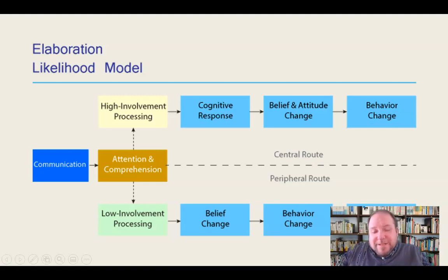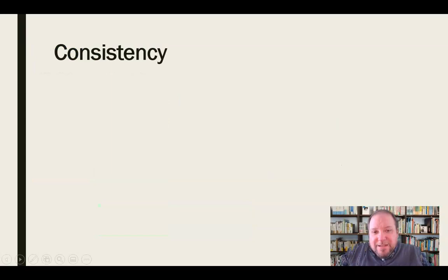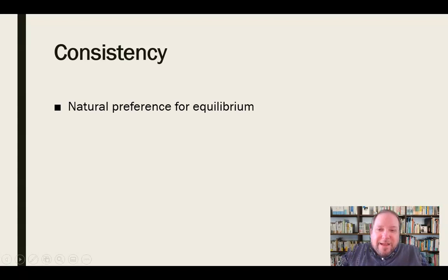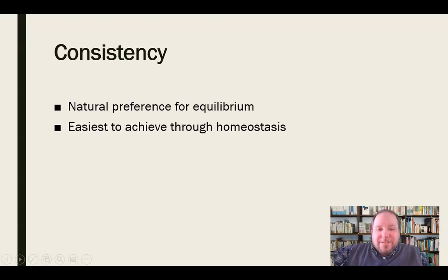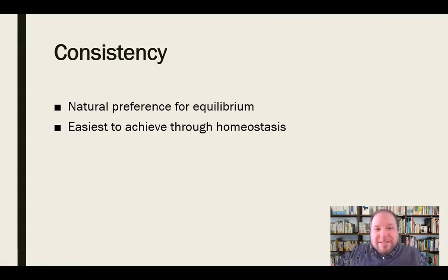The third process premise is consistency. Humans have a natural preference for equilibrium — we like things to remain even and not get too far out of whack. The easiest way to achieve this is through homeostasis: doing the same things, having predictability, understanding things, and having the world match up to what we think is going to happen and what we think should happen. That's when we get that consistency.